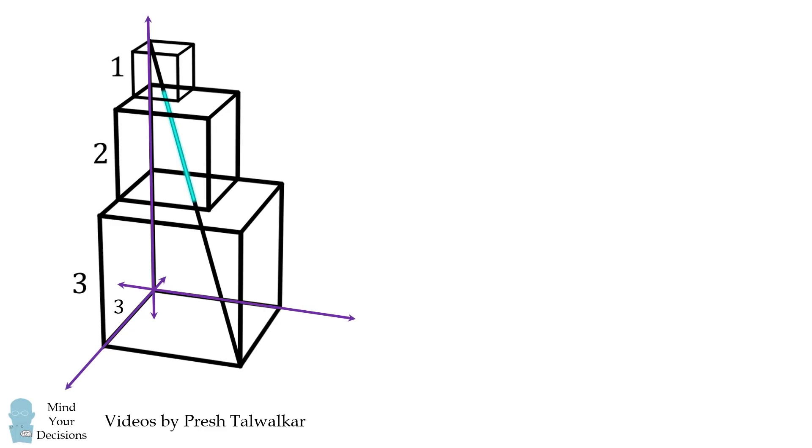Since the bottom cube has an edge length equal to 3, we can label one corner as the point P with coordinates (3, 3, 0). The other corner we will label with the point Q, and it will have a coordinate of (0, 0, 6).